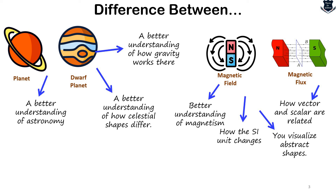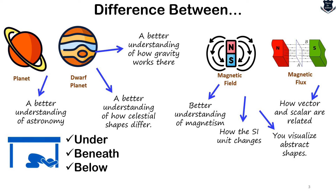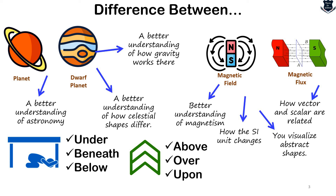You also try to visualize abstract shapes — imagining an inflow of things flowing like water or a river. This gives you a much deeper understanding of concepts. Moving outside physics, consider the difference between three prepositions: under, beneath, and below. 'Under' refers to a position directly below something, suggesting close physical proximity. 'Beneath' is similar but often implies being covered by something. 'Below' indicates a lower position in a more general sense, not necessarily directly underneath. Even comparing prepositions, we see that a better understanding of subtle differences enriches comprehension. Can you tell me the difference between 'above,' 'over,' and 'upon'? Please do let me know in the comment section.